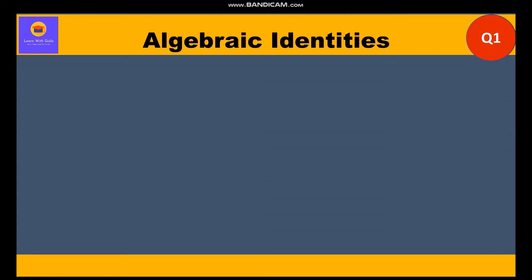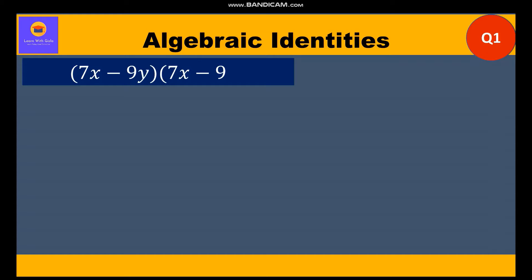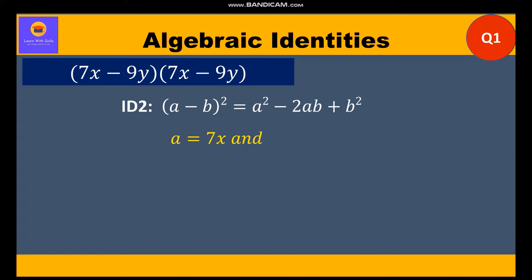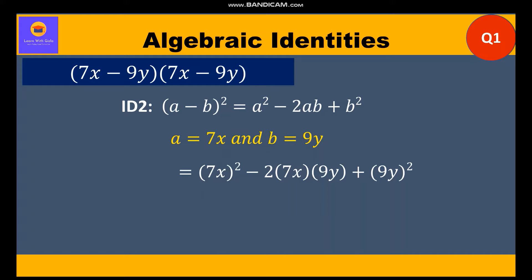Let's start with the first question: (7x − 9y) into (7x − 9y). This is clearly Identity 2, which is (a − b)² = a² − 2ab + b². Here a = 7x and b = 9y. Substituting into Identity 2, we get (7x)² − 2×7x×9y + (9y)² = 49x² − 126xy + 81y². This is our product of the given factors.